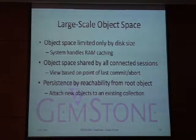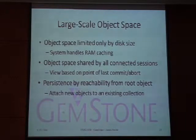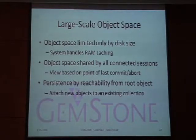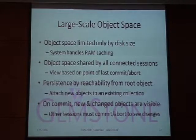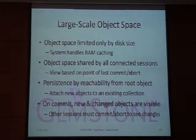Persistence is by reachability from a root object. To make an object persistent you don't say 'save' as you would in a relational database — instead, you simply add it to a collection or reference it from another object. If it's referenced from a persistent root, when you commit it will become persistent. When you do a commit or abort, new objects committed by other sessions become visible — your changes become persistent and other sessions can see them when they next do a commit or abort.